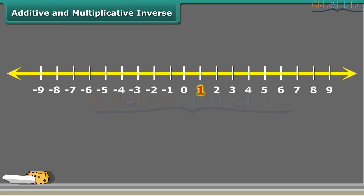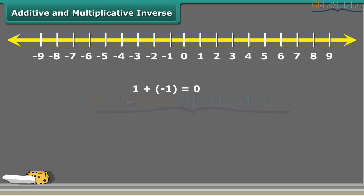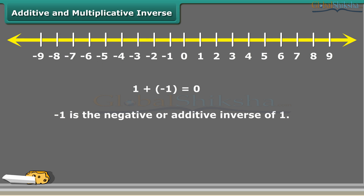You may have come across negative numbers. Is minus 1 the negative of 1? Yes, it is, because 1 plus minus 1 equals 0. So we say that minus 1 is the negative or additive inverse of 1. Likewise, for any rational number — say 3 by 7 — minus 3 by 7 will be its additive inverse.